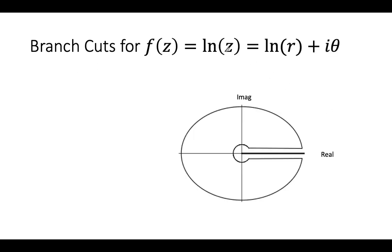Here's an example for ln. For ln, you have z equals re to the i theta, and you just use log properties to separate it like this.